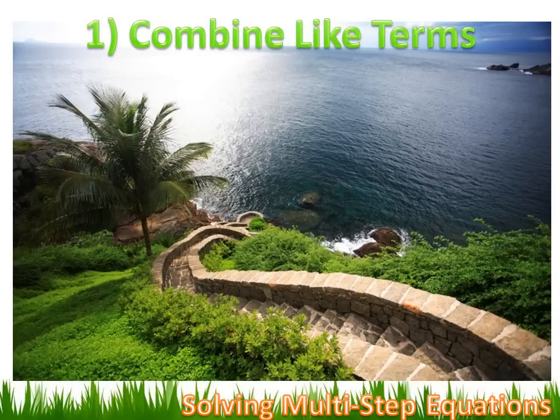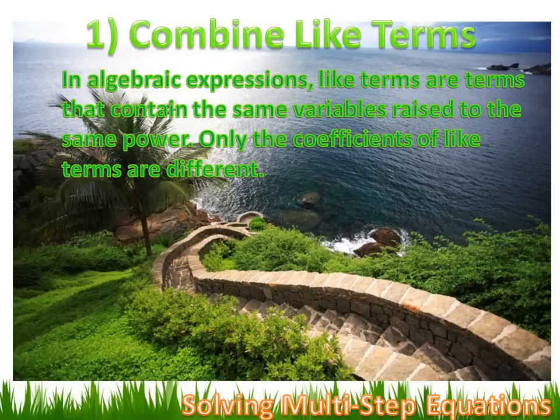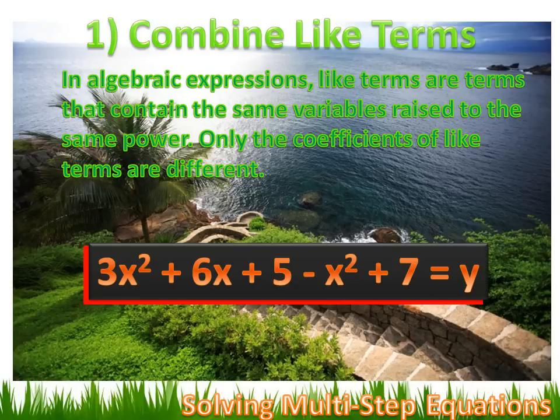The first thing you may want to consider doing is to combine like terms. In algebra, like terms are terms that contain the same variables raised to the same power — only the coefficients of like terms are different. For instance, in 3x² + 6x + 5 - x² + 7 = y, I can see a 3x² and a minus x² — they're both raised to the same power, and the coefficients are different, but that's okay.